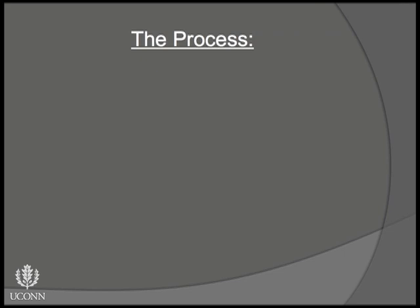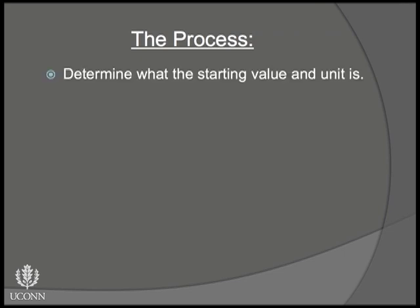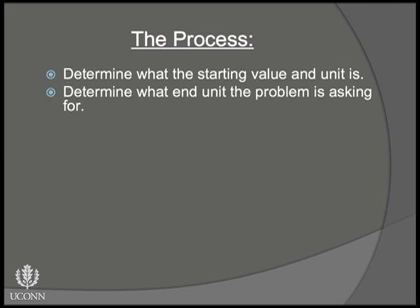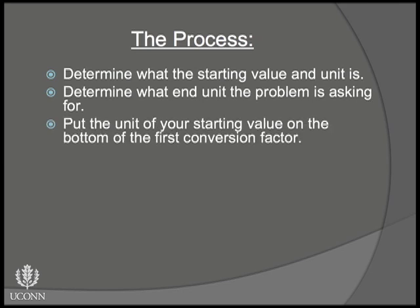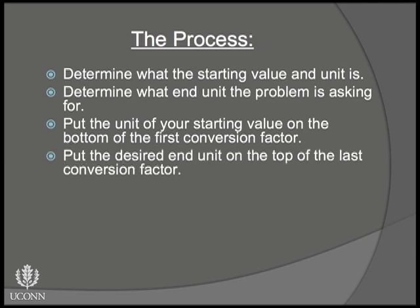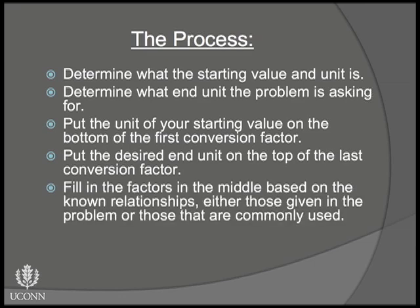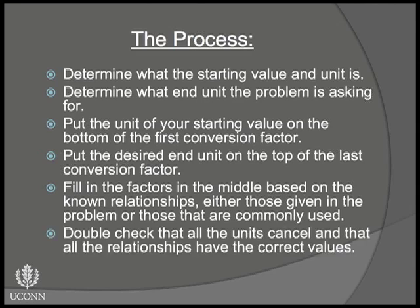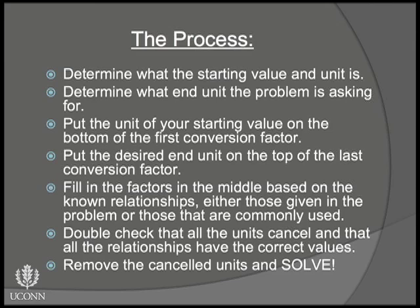We can summarize the process as follows: Determine what the starting value and unit is. Determine what end unit the problem is asking for. Put the unit of your starting value on the bottom of the first conversion factor. Put the desired end unit on the top of the last conversion factor. Fill in the factors in the middle based on known relationships — either those given in the problem or those that are commonly used. At each conversion factor, ask yourself if you can relate the last uncancelled value to the desired end value. Double check that all the units cancel and that all relationships have the correct values. Remove all cancelled units and solve for your end value. As long as you know where to start and where to end, if you follow the units, you can't go wrong.